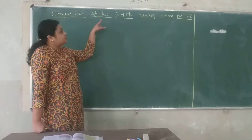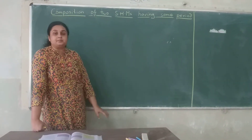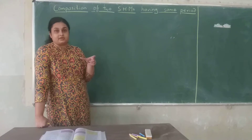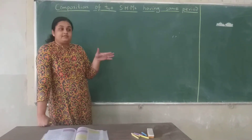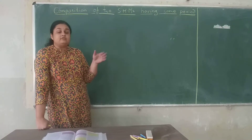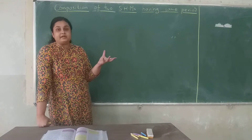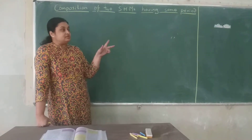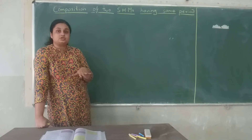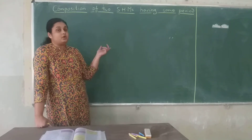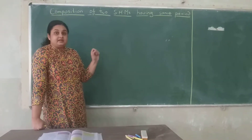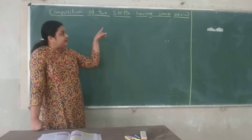Today we are going to study the composition of two SHMs having the same period. Till now you have studied just one wave moving in one direction. Now, what will happen if two waves are simultaneously moving in one dimension along the same path? What is the resultant displacement going to be? We will check whether the resultant of two simple harmonic motions along the same path and with the same period is also a simple harmonic motion or not.